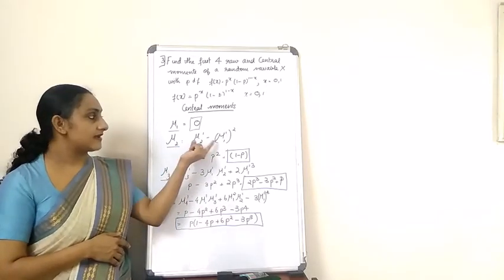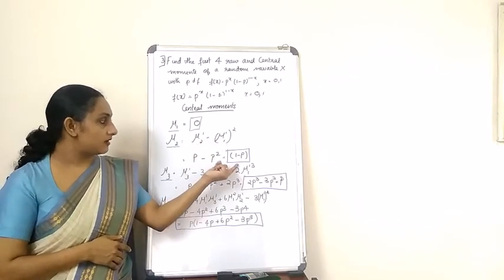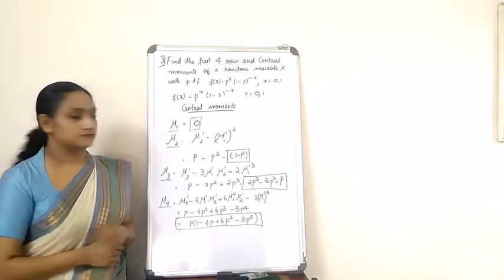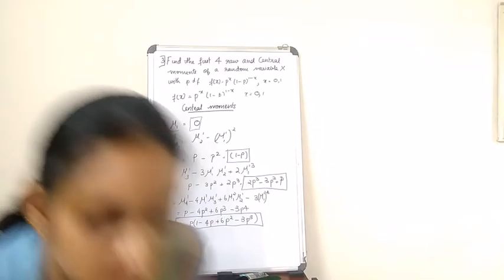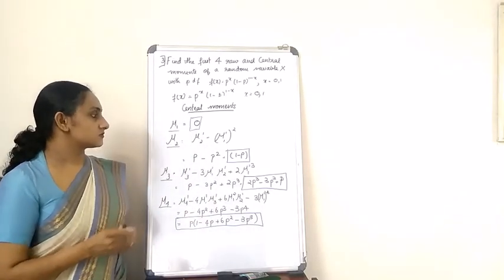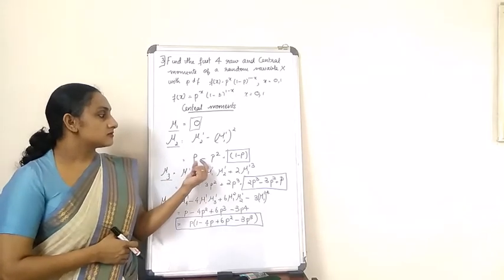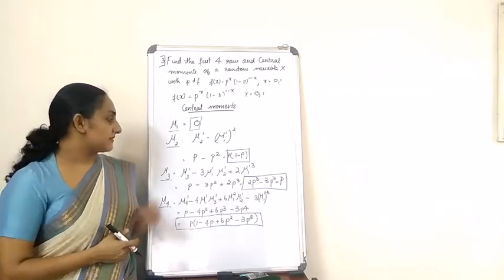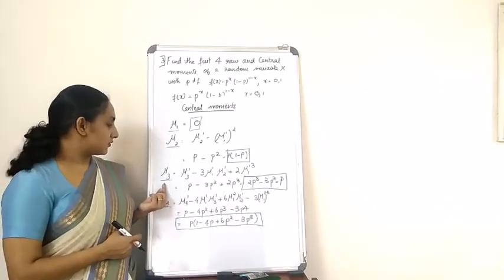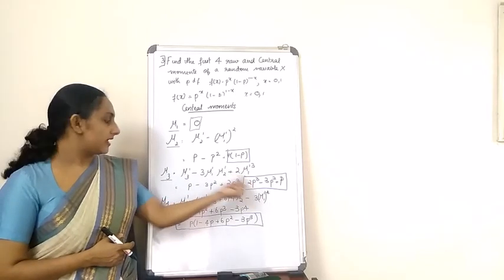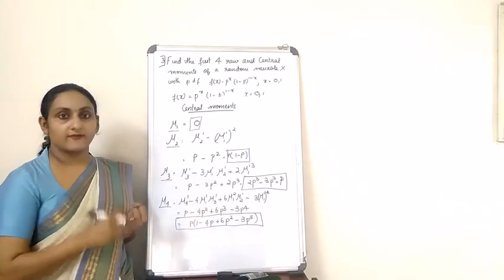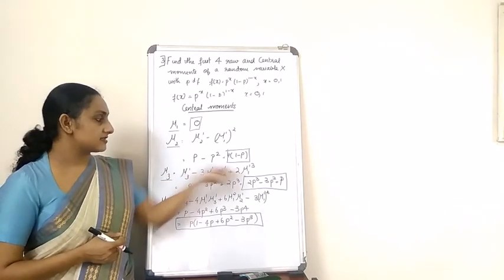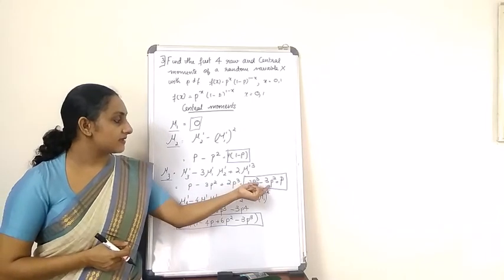Substituting those values gives μ₂ = p - p² = p(1-p). For the third central moment μ₃, substituting the values for μ₃', μ₁', and μ₂' into the formula, you get 2p³ - 3p² + p.